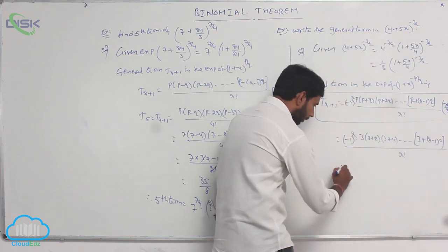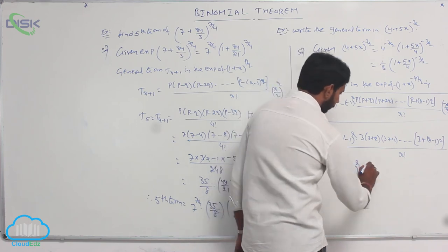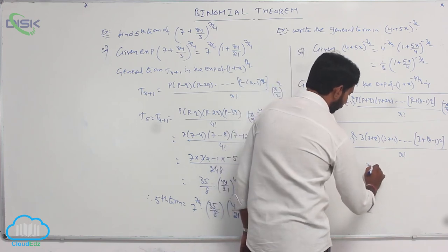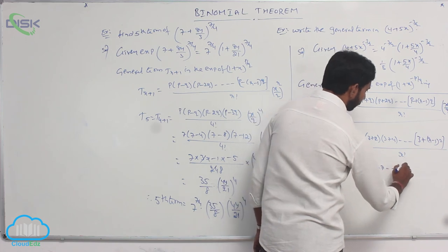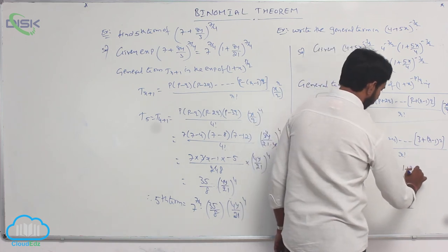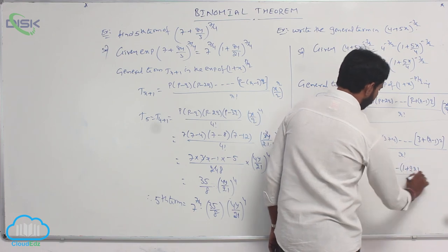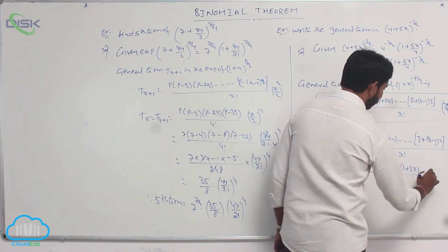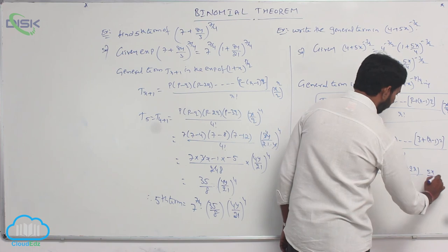That is equal to (−1)^r · 3·5·7·...·(1+2r) / r! · (5x/8) whole power r, which is the required general term.